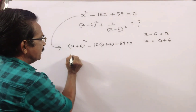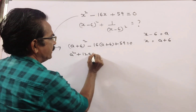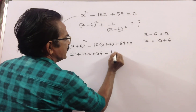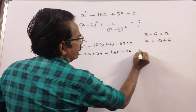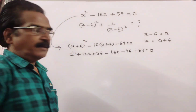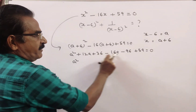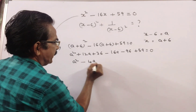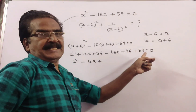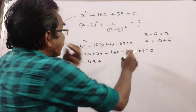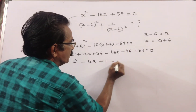This gives a² plus 12a plus 36 minus 16a minus 96 plus 59 is equal to 0. So a² minus 4a plus 36 plus 59 minus 96 equals 0, which simplifies to a² minus 4a minus 1 is equal to 0.